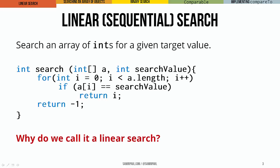The most straightforward way that we could search for something is really just to look element by element until we find it. That's what we see implemented here. We're looking through an array of ints for some target value, which we're calling search value. This method is going to return either the index of the first matching value or negative one if that value is not actually in the array.